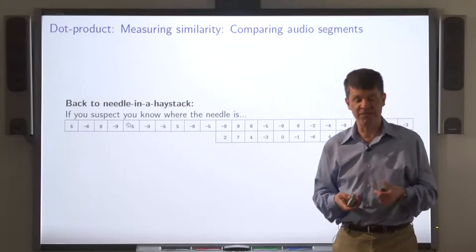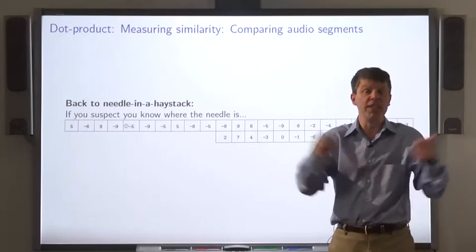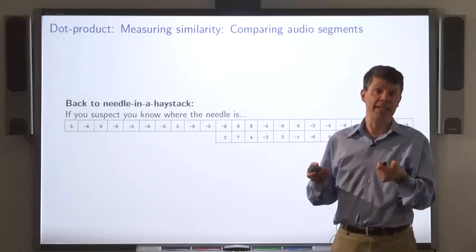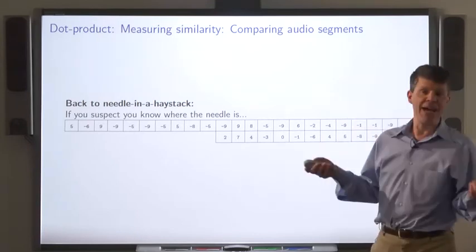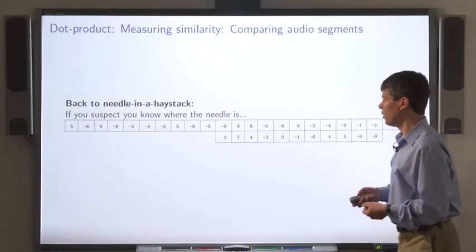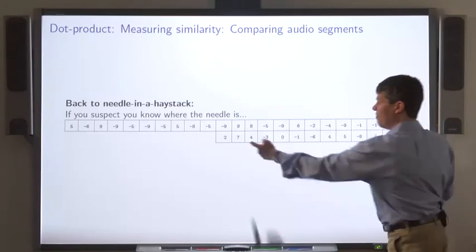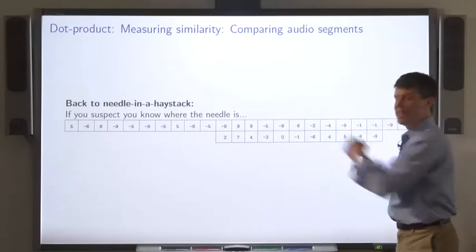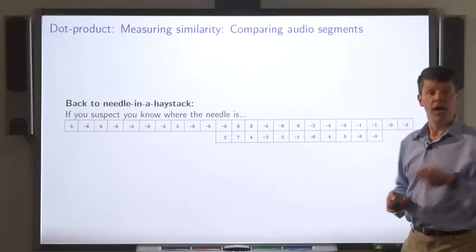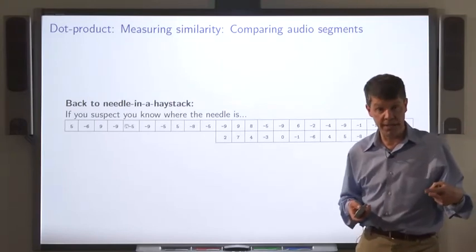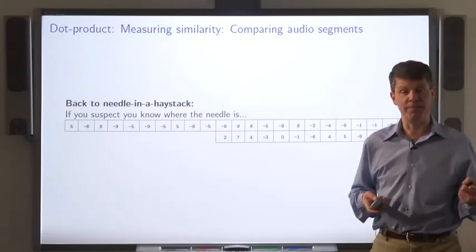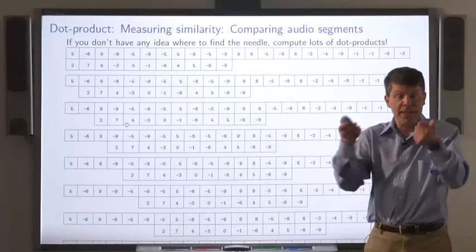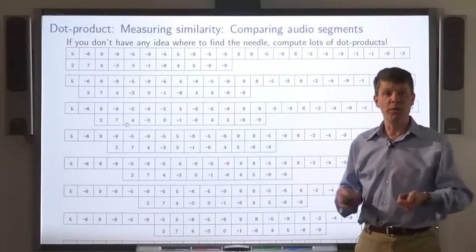But now let's get back to the problem of finding a short audio clip within a longer audio segment. We don't know exactly where the audio clip is supposed to appear in the longer segment. But let's say we have some guess as to where it is. So we can take a dot product of the vector representing the short clip with the corresponding sub-sequence of the long audio segment. And again, the higher the dot product, the greater the similarity between them. Now ordinarily, we don't know where the short clip appeared in the long segment. That's why we're carrying out this computation.